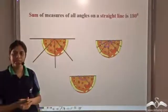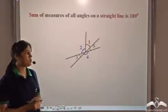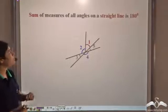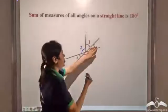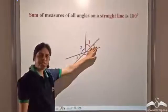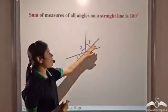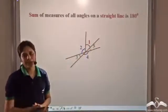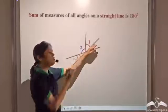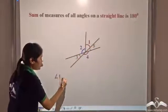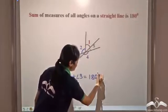So, the sum of all these angles will be 180 degrees. Now, we have these angles here. Let us see what we can say about them. We know that the sum of measures of all the angles on a straight line is 180 degrees. We can see that this is a straight line. The sum of angles on either side of a straight line is 180 degrees. So, considering this side of the line, there are three angles being formed: angle one, angle two, angle three. So, angle one plus angle two plus angle three is equal to 180 degrees.